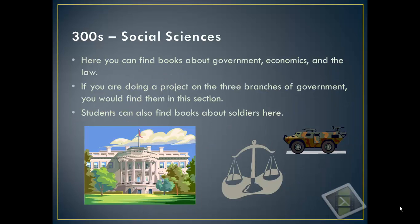The 300s are called the social sciences. These include books about government, economics, and the law. Third graders last year looked up books here about the three branches of government. Students can also find really cool books about soldiers — a lot of the army books and coast guard books that I've been checking in recently can be found in the 300s section.